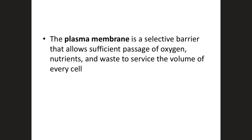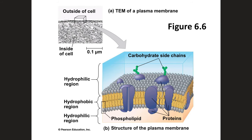First, let's talk about the plasma membrane. The plasma membrane is a selective barrier that allows sufficient passage of oxygen, nutrients, and waste to service the volume of every cell. Therefore, the plasma membrane allows things to go in and out of the cell. The plasma membrane is selectively permeable — it only allows certain things in and out of the cell.